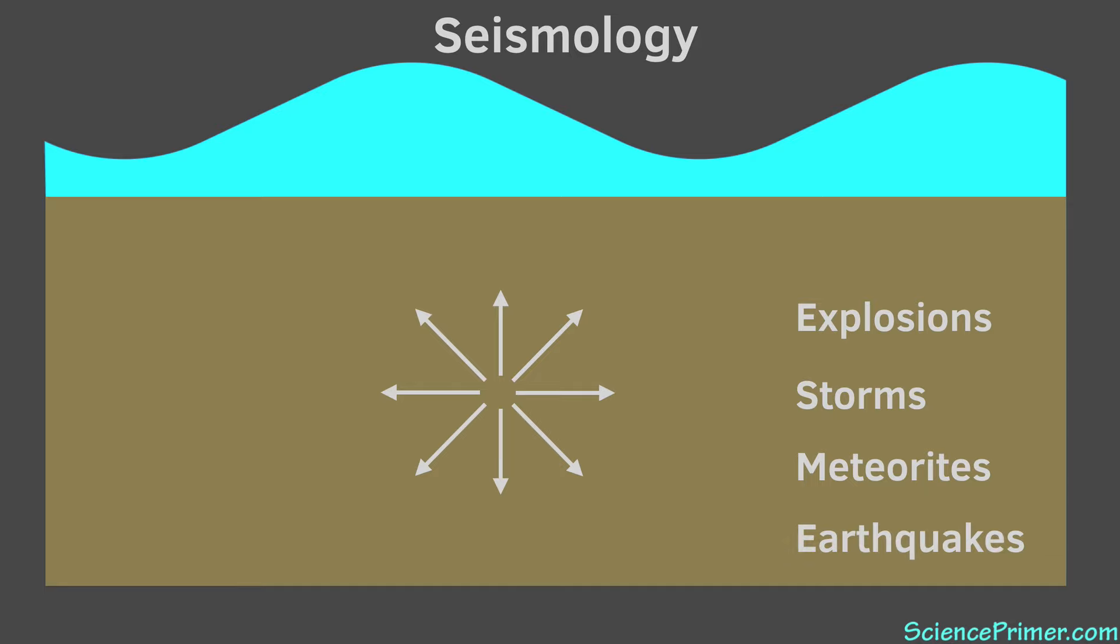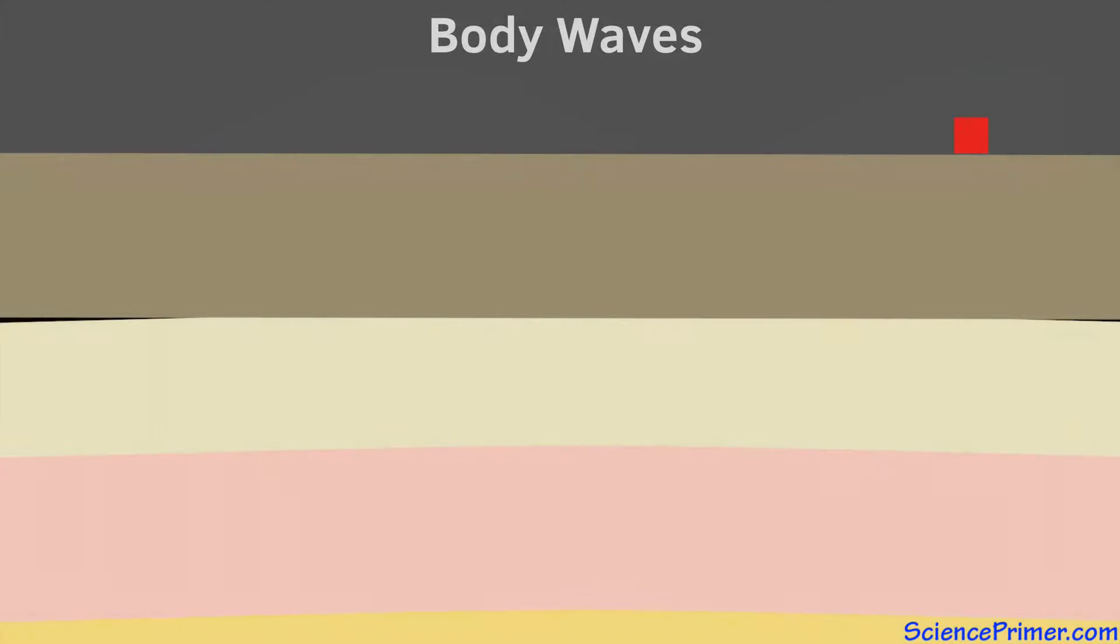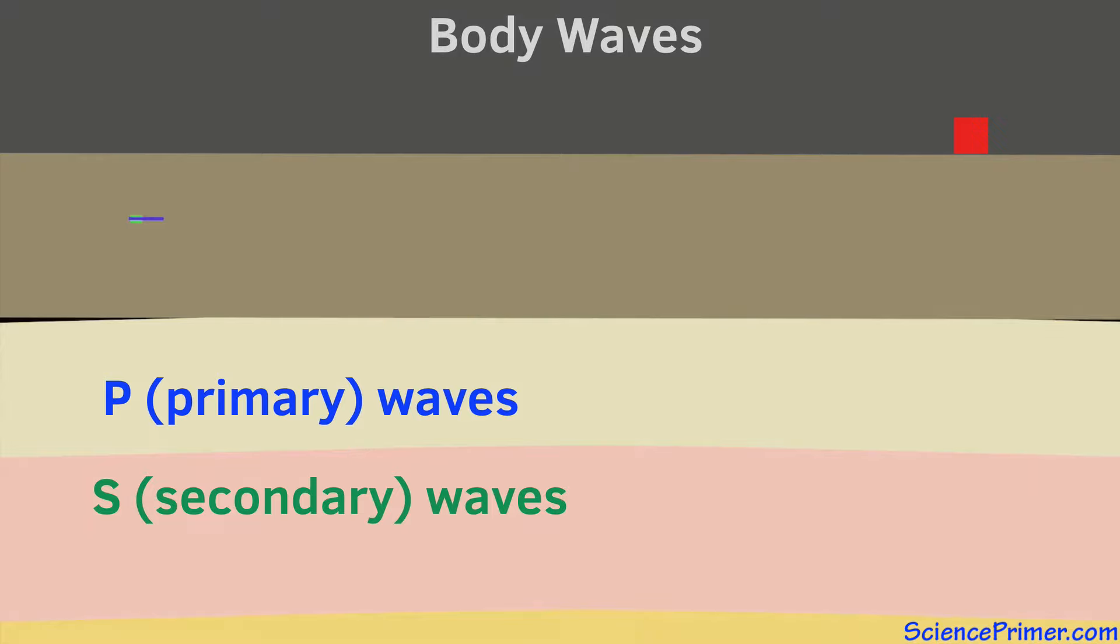When an earthquake occurs somewhere inside the Earth, two types of body waves are created. These are often referred to as P and S waves, where P stands for primary and S for secondary. These names relate to the speed the waves travel. Primary waves travel faster than secondary waves, so they are the first ones to arrive at any point distant from the epicenter of the earthquake.